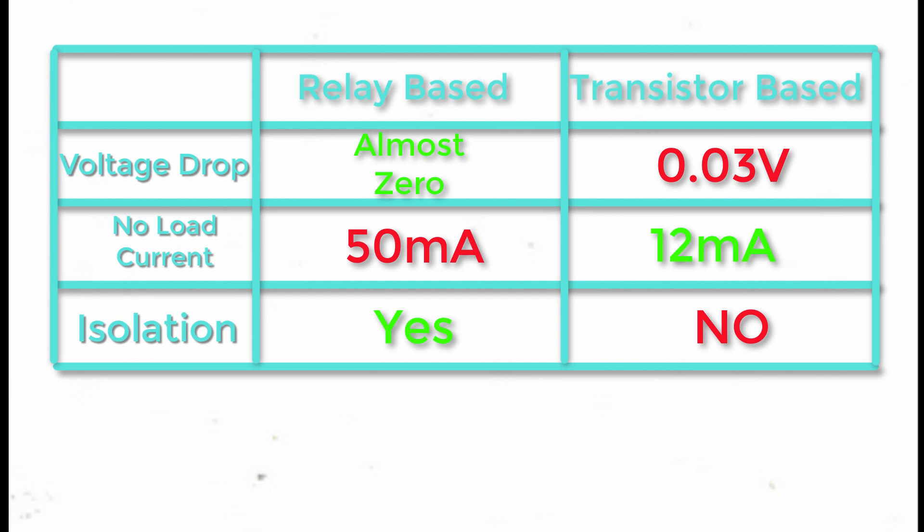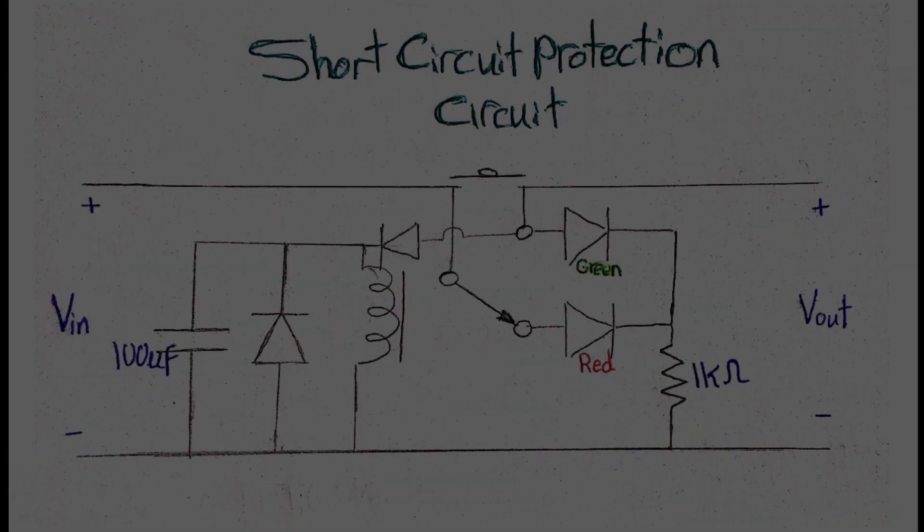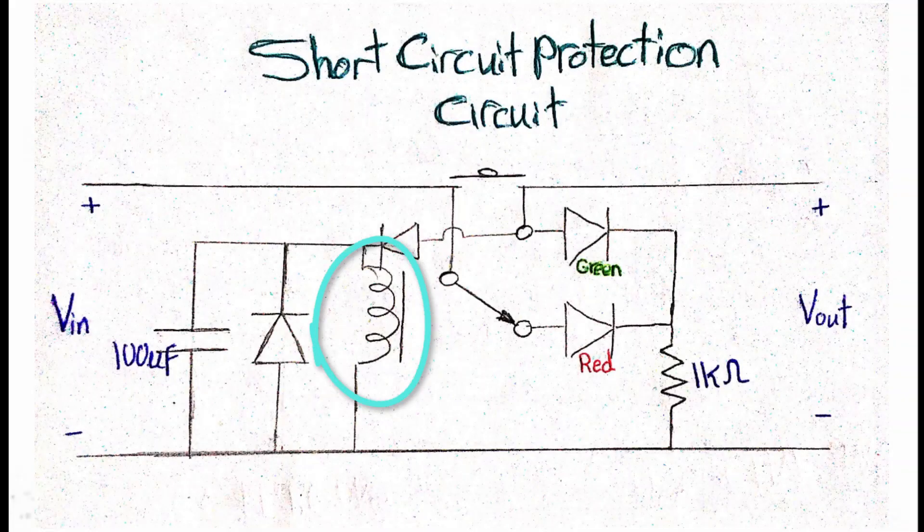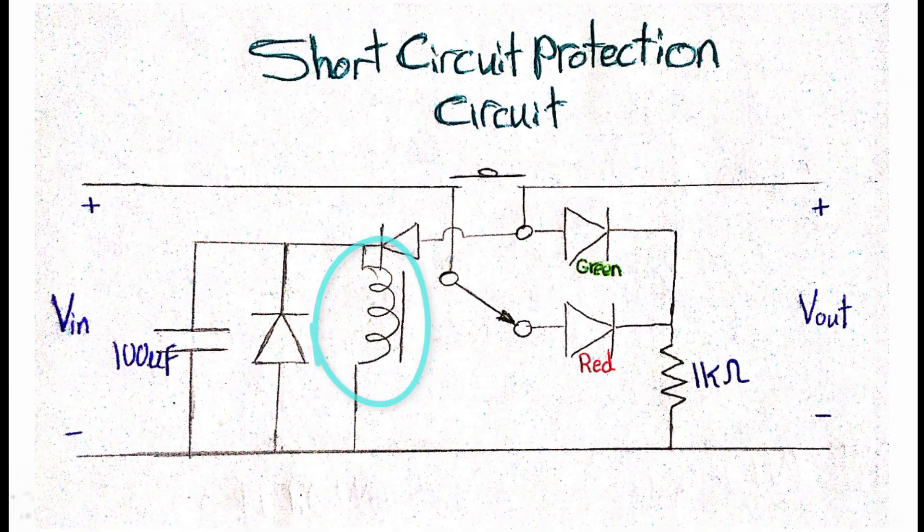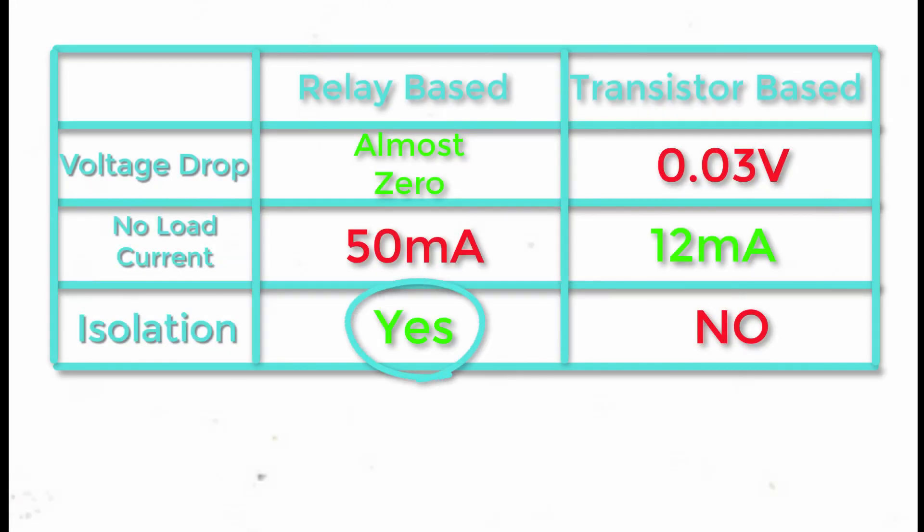From the obtained results, we can see that the relay-based circuit consumes a relatively large current, even in no-load condition, due to the parallel relay coil. But the good thing about this circuit is that it provides isolation to your power source, which serves safety purpose.